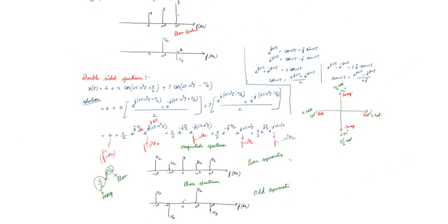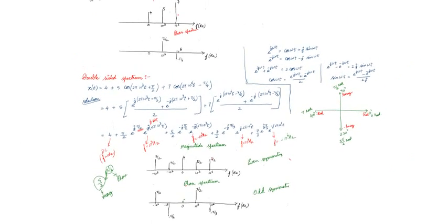Now I wish you can compare both the single-sided and double-sided spectrum. In the single-sided spectrum we have only positive frequencies with magnitudes 4, 5, and 7 at 0, 10³, and 10⁶ Hz respectively. In the double-sided spectrum we have magnitudes 4, 5/2, and 7/2 at the positive frequencies, and also 5/2 and 7/2 at the negative frequencies. Double-sided means it has both positive and negative frequencies.